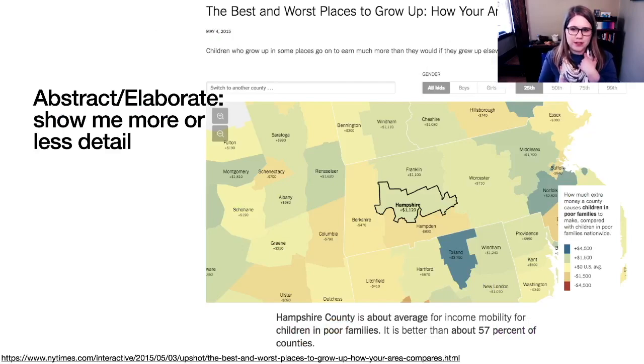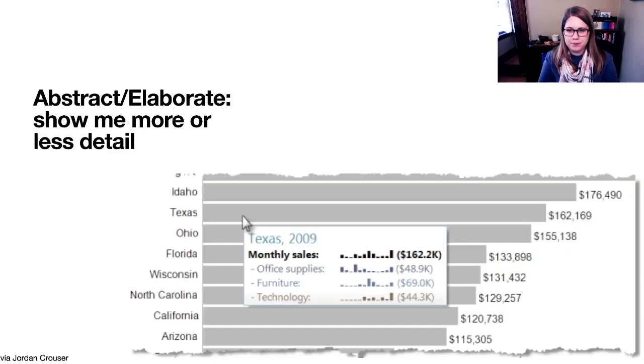There's also abstract elaborate, which is kind of show me more or less detail. And I really love this piece from the New York Times where it detects the zip code that you are in. So I think I took this screenshot when I was living in Massachusetts. And it's showing me detail about the place where I was. And so it's able to give me the right level of detail because it knows where I am. And there's also tool tips, I think of that as a way to abstract or elaborate. So you could see the bar for Texas, and it's got the big picture, but then you could hover over it, and it would give you more detail. That's a way of interacting.